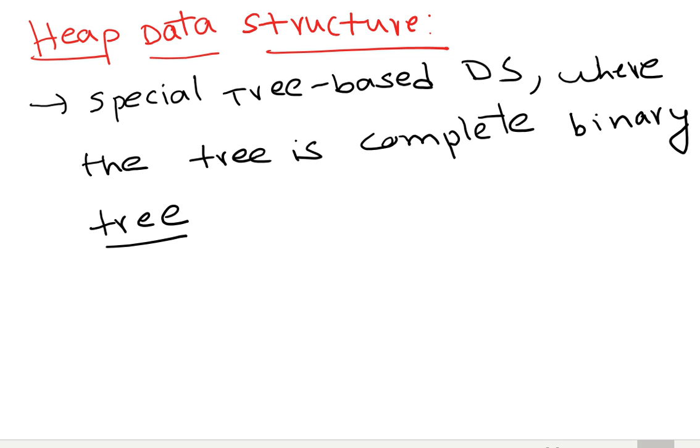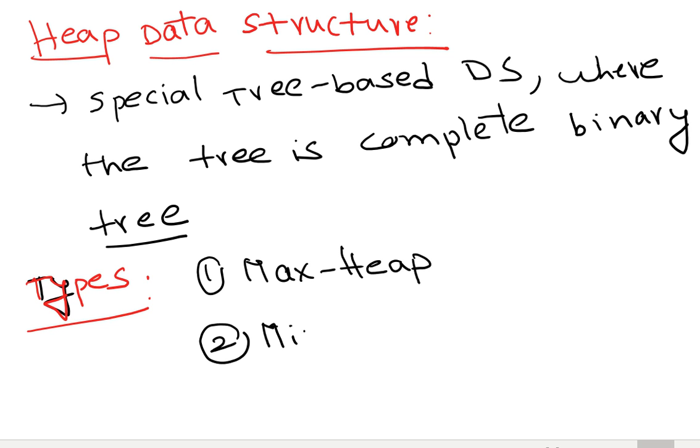We have different types of binary trees. What are the main types? Max heap and min heap.